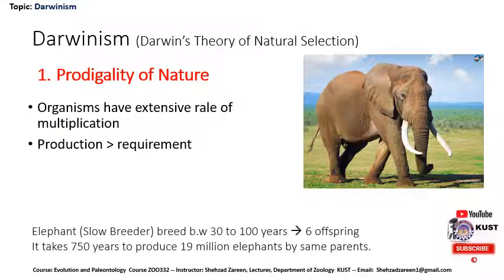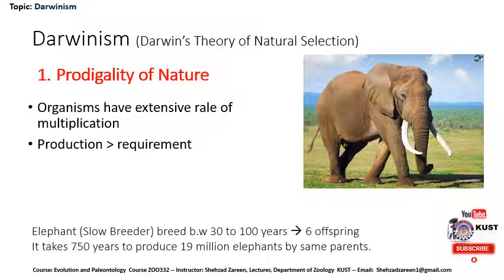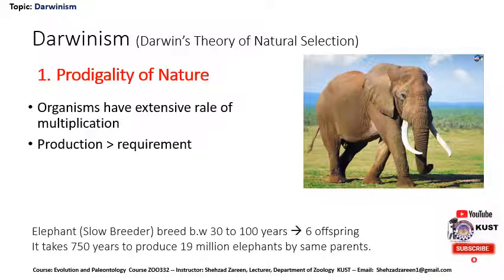There are a few points of Darwinism, that is Darwin's theory of natural selection. The very first point is prodigality of nature. It means that organisms have an extensive rate of multiplication or reproduction. The production of organisms is far greater than the requirement by the environment.